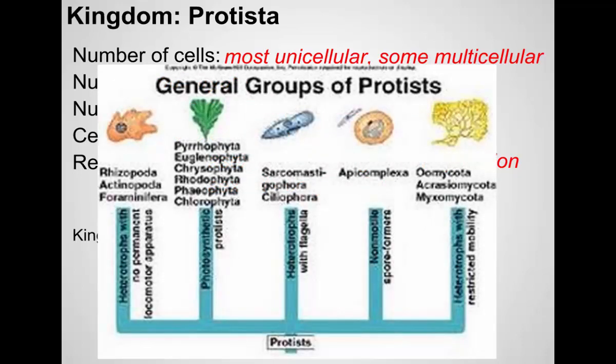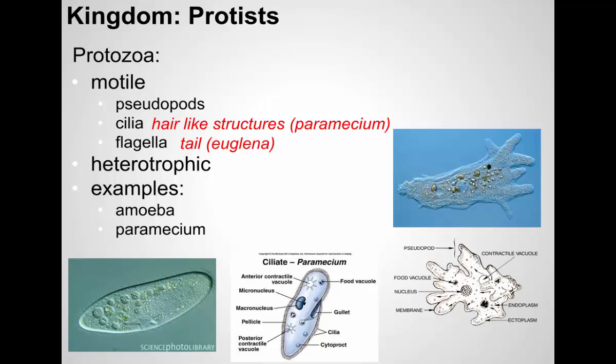When we look at the various types of protists, there are different groups based on how they move, based on whether or not they're photosynthetic or heterotrophic. There are different ways to split up this huge kingdom of random stuff. The traditional way we talked about protists was animal-like protists or plant-like protists — that's how they were originally classified. The protozoans — that's the word for the animal-like protists — are the things that move around.